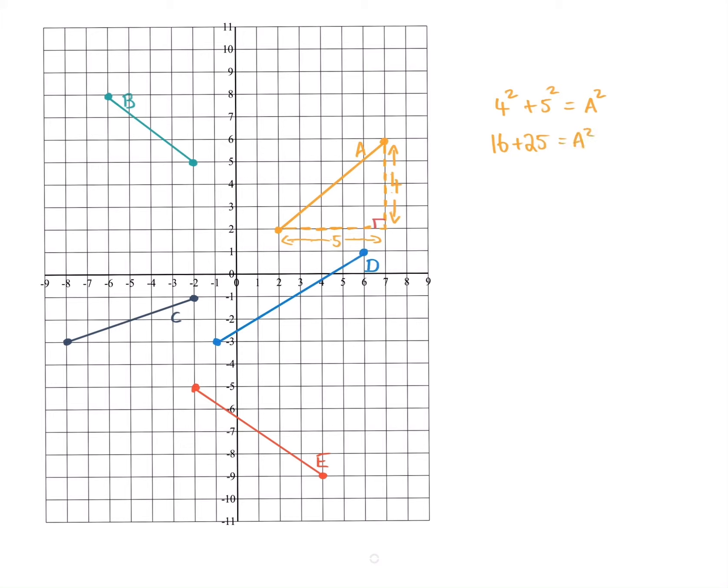So the next thing that we do is we add 16 and we also add 25. So 16 plus 25 is 41. That equals A squared.